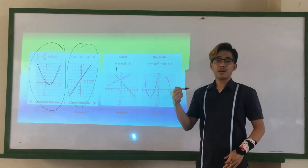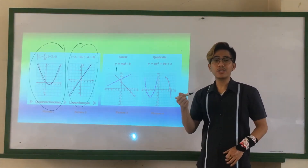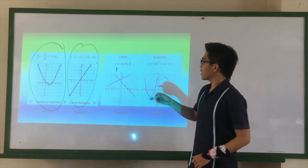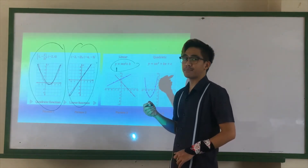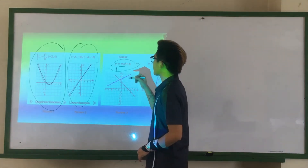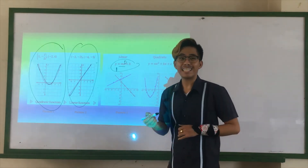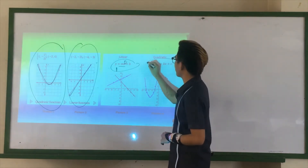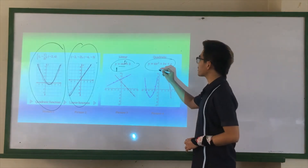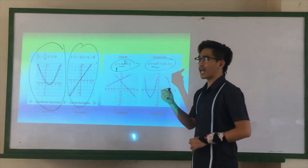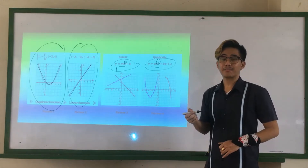The next way to differentiate quadratic function from linear is by using its standard forms. The third picture: we have the standard form y equals mx plus b. Looking at the first term with variable x, we have the exponent 1. Therefore, it is linear. For quadratic function, we have y equals ax squared plus bx plus c. For the first term with variable x, we have the exponent 2. Therefore, it is quadratic.